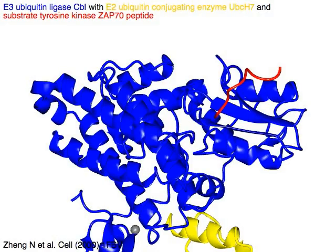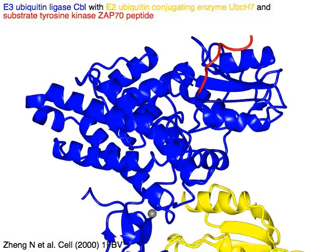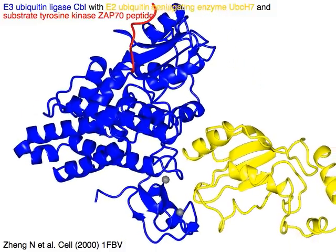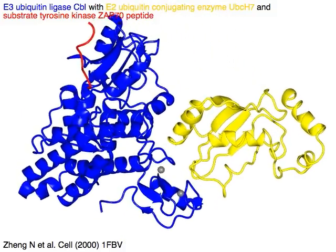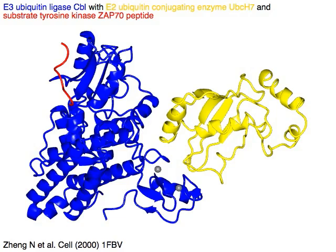E3 ubiquitin ligase CBL with E2 ubiquitin conjugating enzyme UBCH7 in yellow, forming a ternary complex with the red ZAP70 peptide.